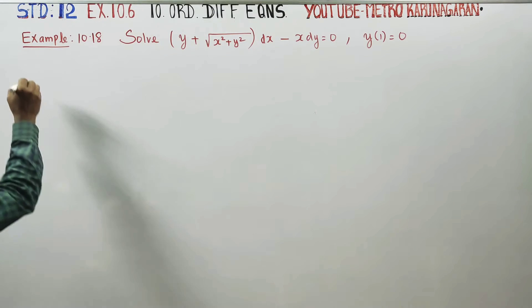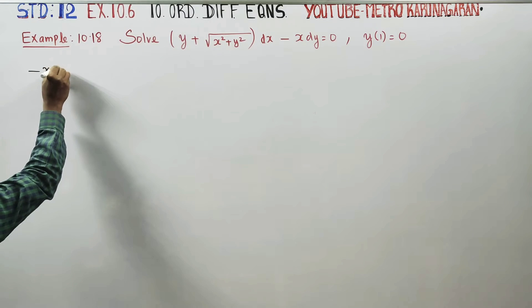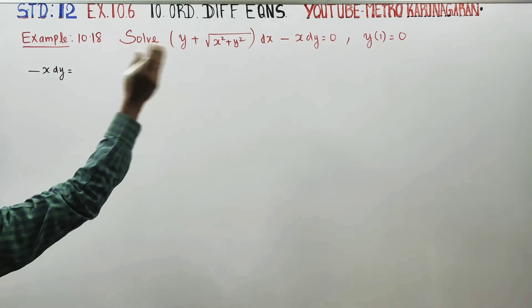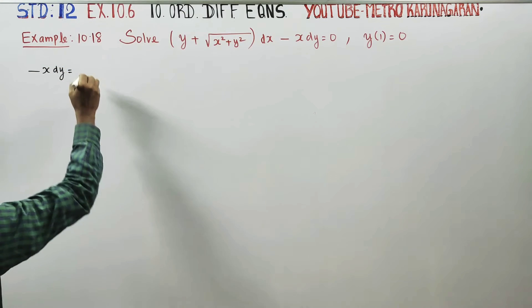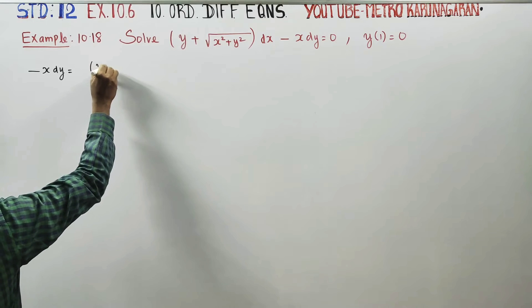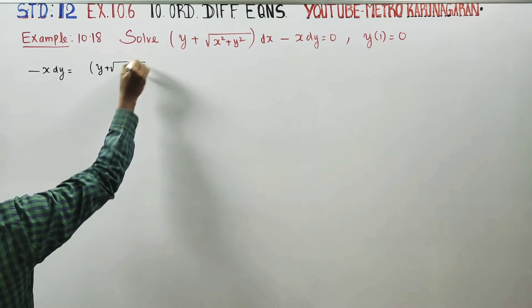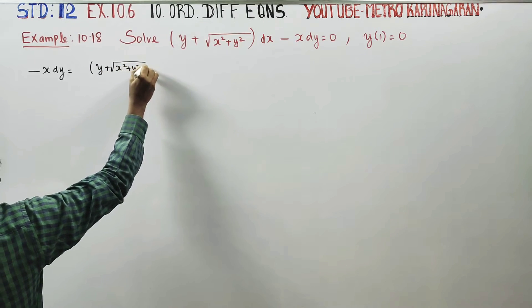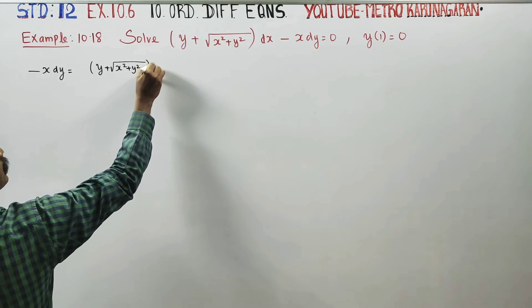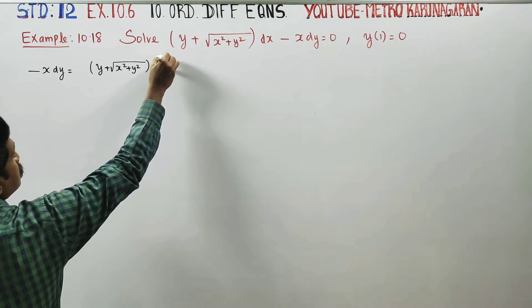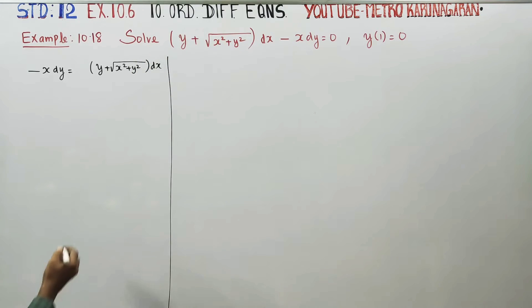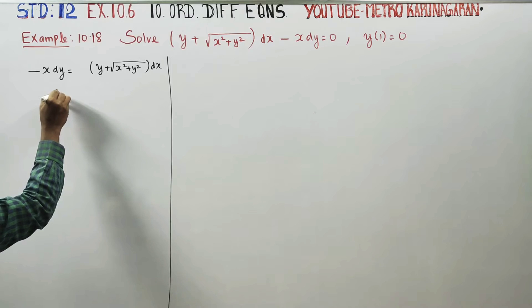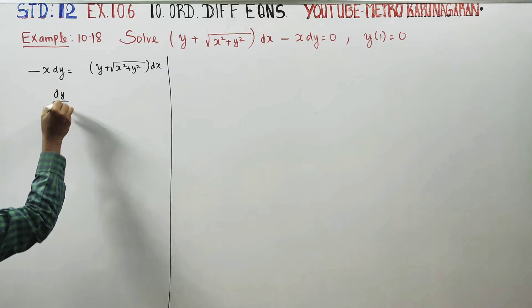Stage 1: minus x dy. y plus root of x square plus y square into dx. Next stage, dy by dx.